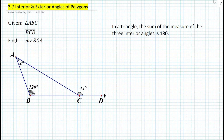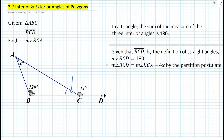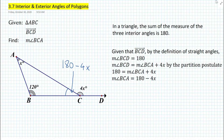Well, here we know that the angle represented by x and the angle represented by 120 degrees, and this angle over here, they all add up to 180. So the first thing we want to do is find this angle in terms of x. Given that we have a straight ray, which is BCD, by the definition of straight angles, we know that the measure of angle BCD must be 180. We also know that the measure of angle BCD is equal to the measure of angle BCA plus 4x by the partition postulate. Then we can simply substitute to state that 180 is equal to the measure of angle BCA plus 4x, which means that the measure of angle BCA is simply equal to 180 minus 4x.